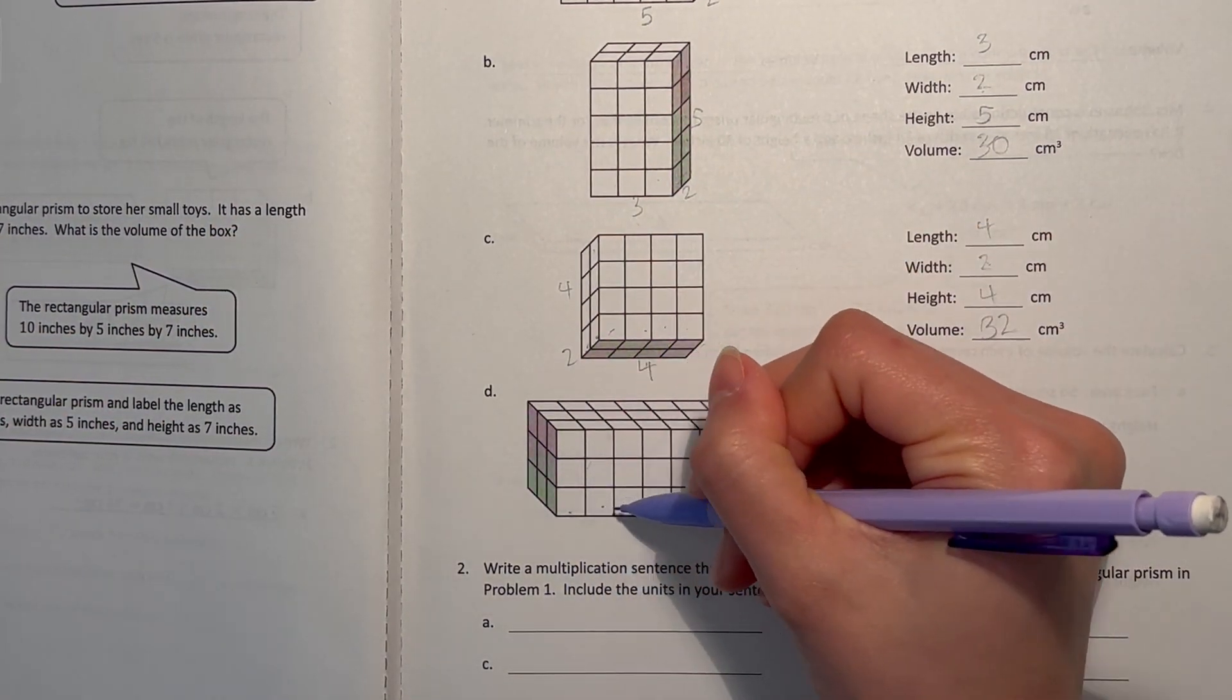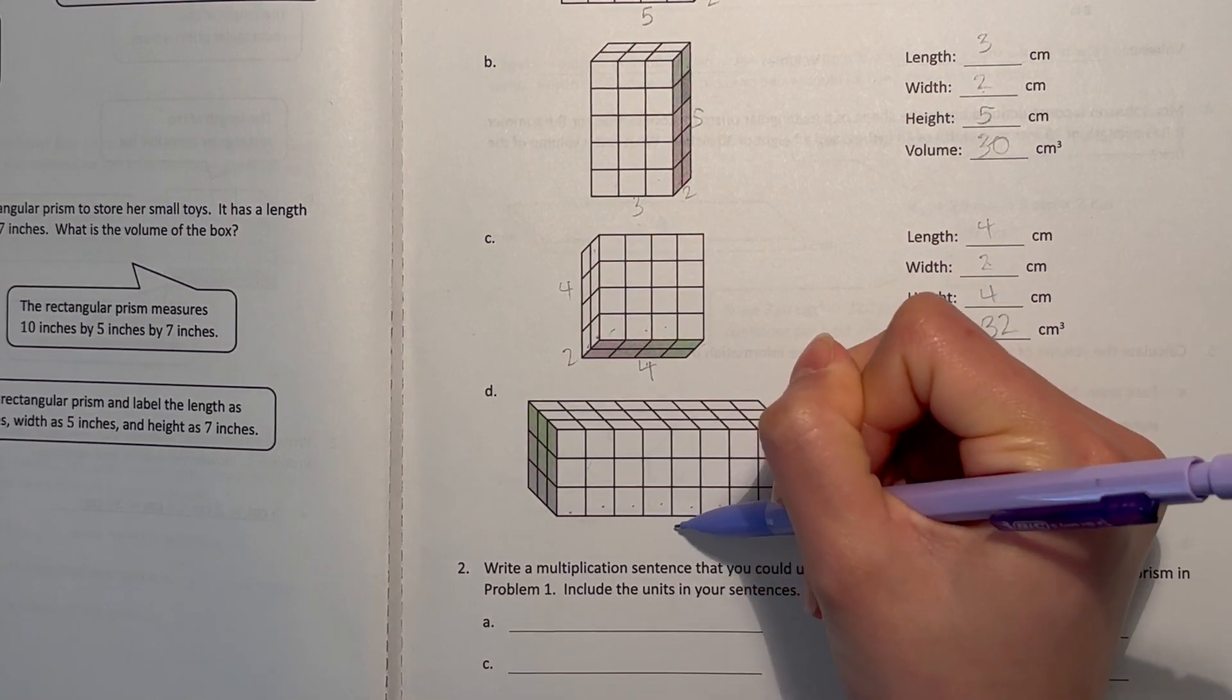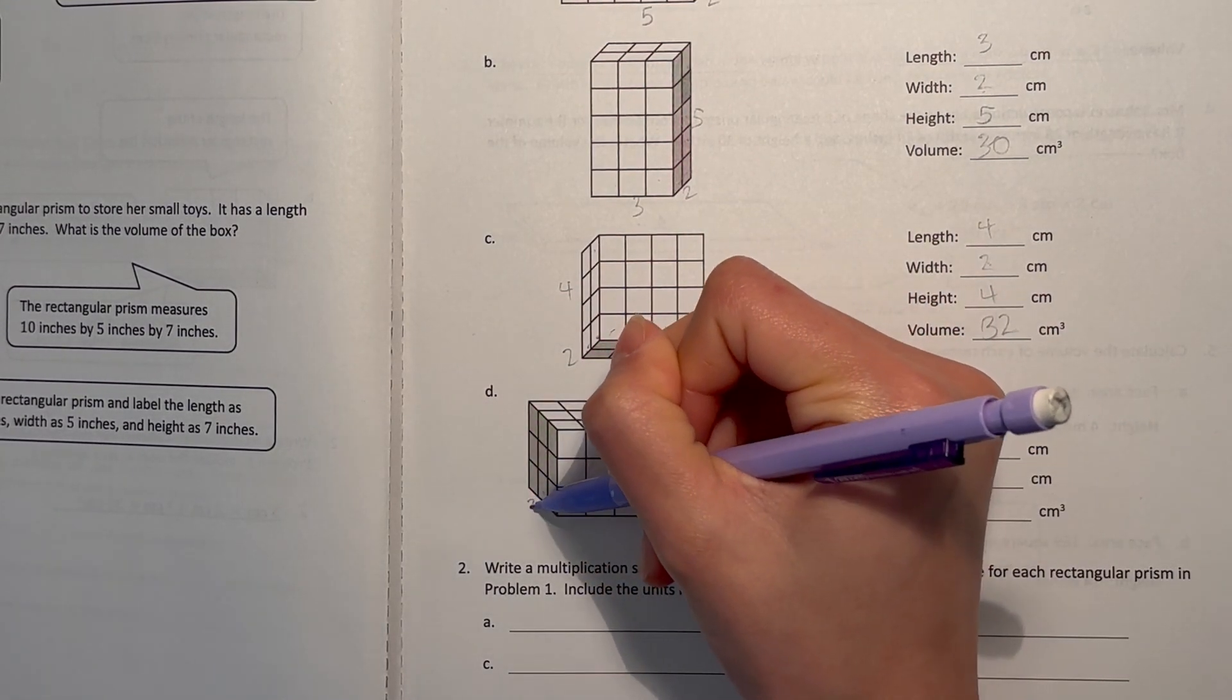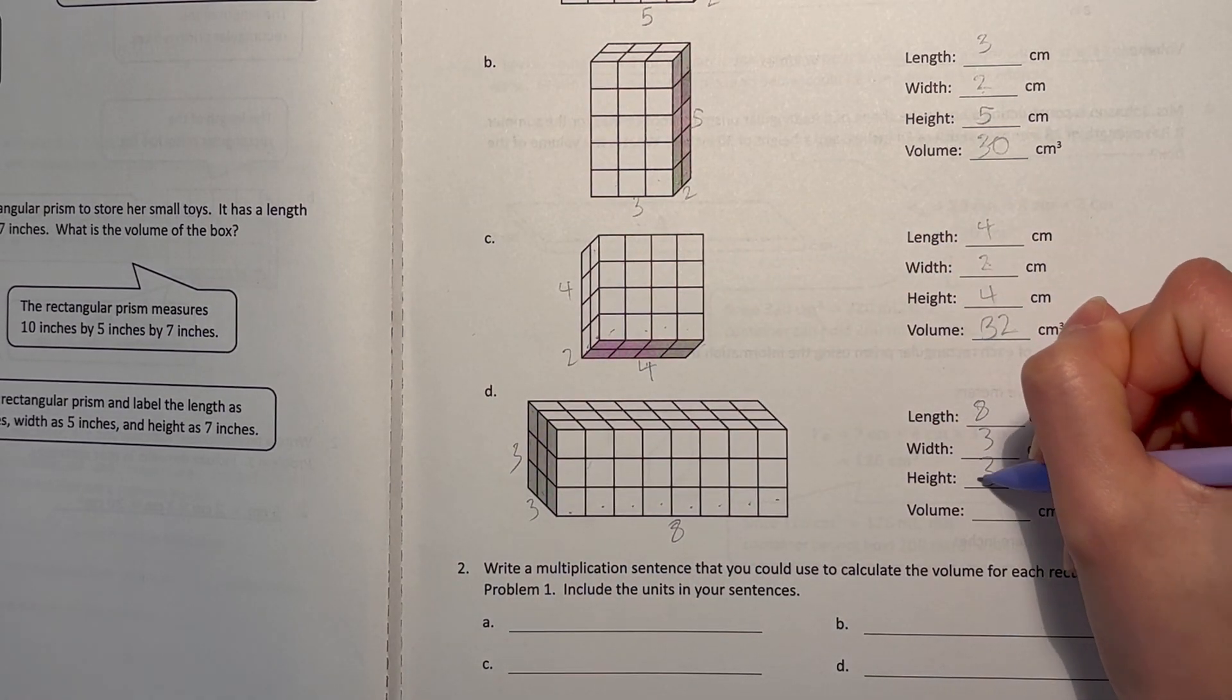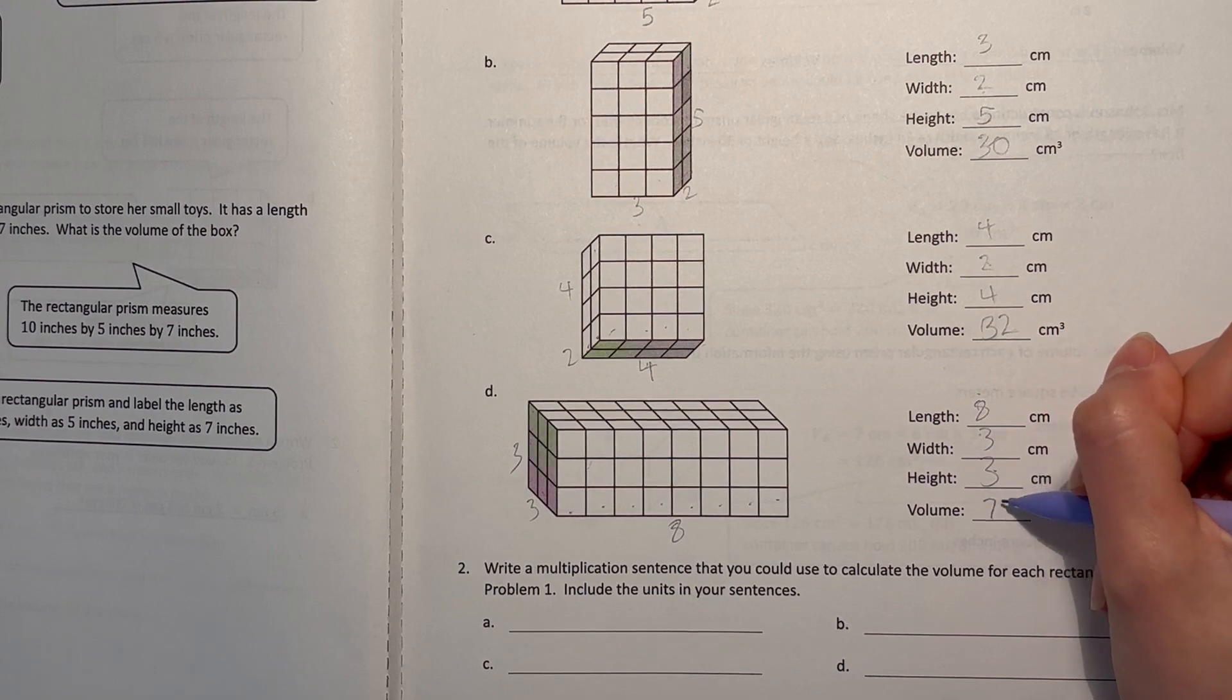All right, and D: eight is our length, three is our width, and three is also our height. So three times three is nine times eight is 72.